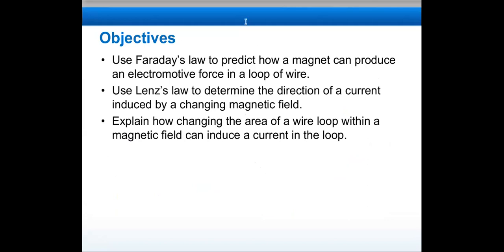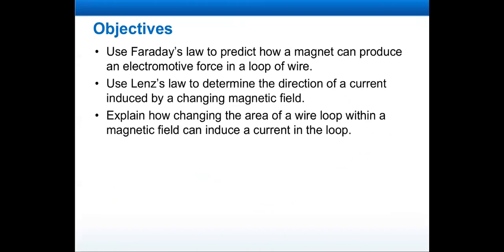The objective is to use Faraday's law to predict how a magnet can produce an electromotive force in a loop of wire. And then we will use Lenz's law to determine the direction of a current induced by a changing magnetic field. Then we will explain how changing the area of a wire loop within a magnetic field can induce a current in the loop.